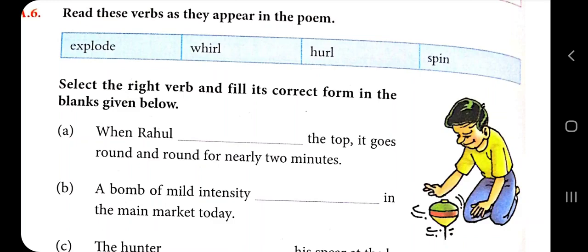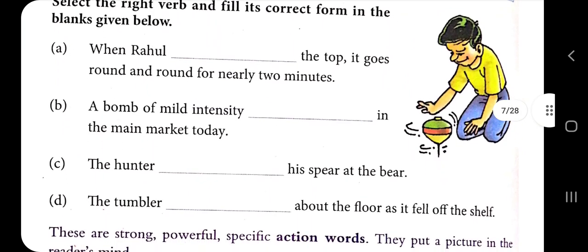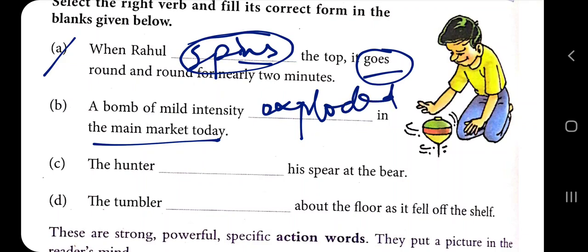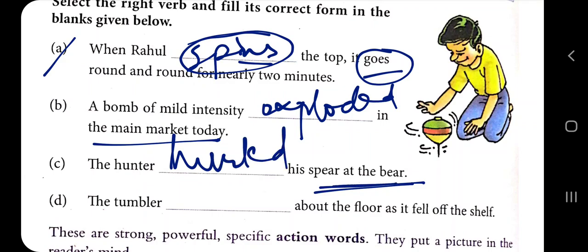Advices are always free and easy to give. Now read these verbs as they appear in the poem, select the right verb, and fill in its correct form in the blanks. You have studied subject-verb agreement and tenses. When Rahul goes — verb should be 'spins.' A bomb of mild intensity is past tense so it is 'exploded.' The hunter hurled his spear at the bear — 'hurled' as it is a past action.